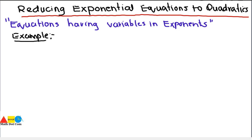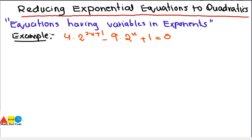Exponential equations are equations having variables in exponents. For example: 4·2^(2x+1) − 9·2^(x+1) = 0. This is an exponential equation because there are variables in the exponents.